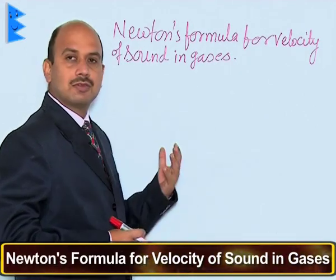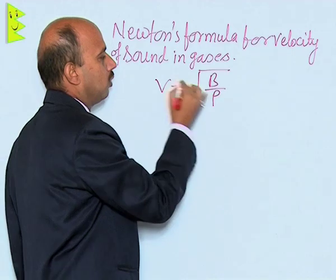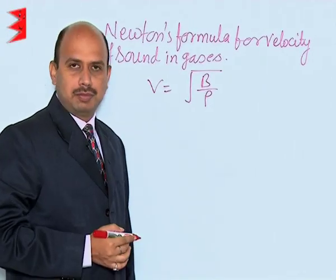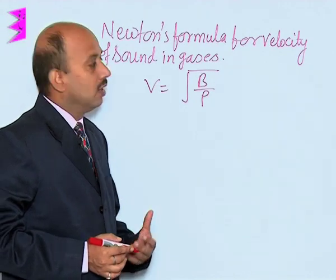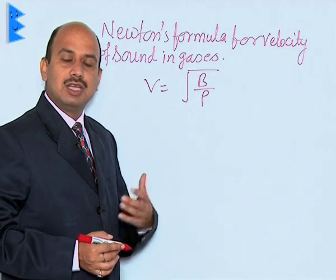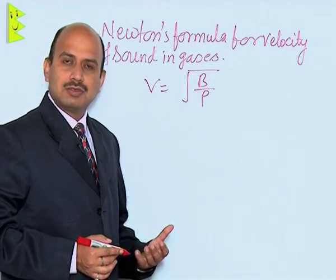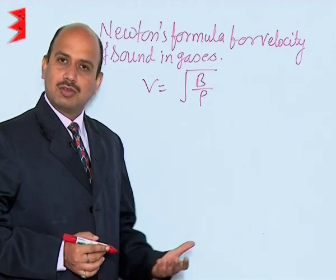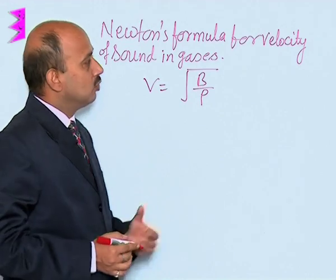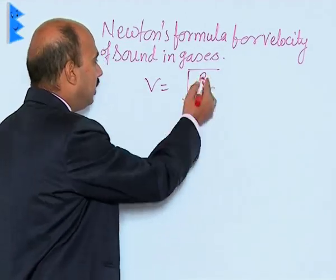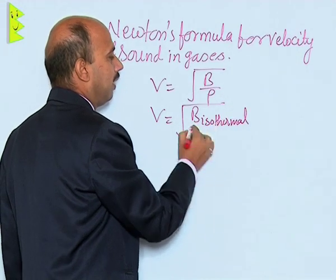In Newton's formula for velocity of sound in gases, the velocity of sound is given by v = √(B/ρ), where B is the bulk modulus and ρ is the density of the medium. Newton assumed that when sound travels through gases, compressions and rarefactions are formed causing changes in pressure and volume. But according to Newton, these changes in the medium are isothermal — meaning during compressions the heat produced is transferred to the surroundings, and heat lost during rarefactions is gained from the surroundings. So he wrote v = √(B_isothermal / ρ).